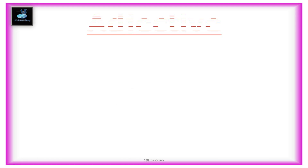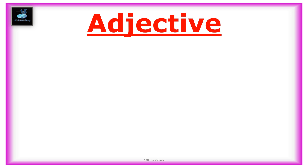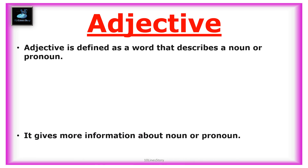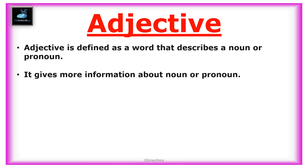Welcome back to 10 Lines Story Channel. The topic is 10 Lines on Adjective. An adjective is defined as a word that describes a noun or pronoun. It gives more information about a noun or pronoun.